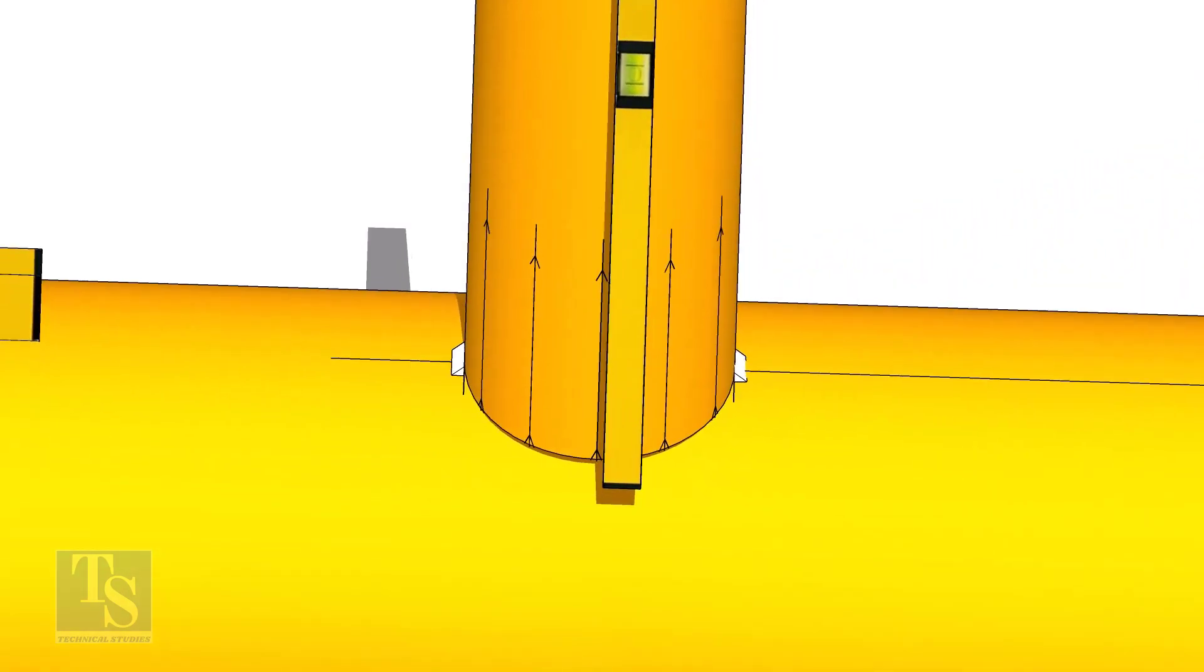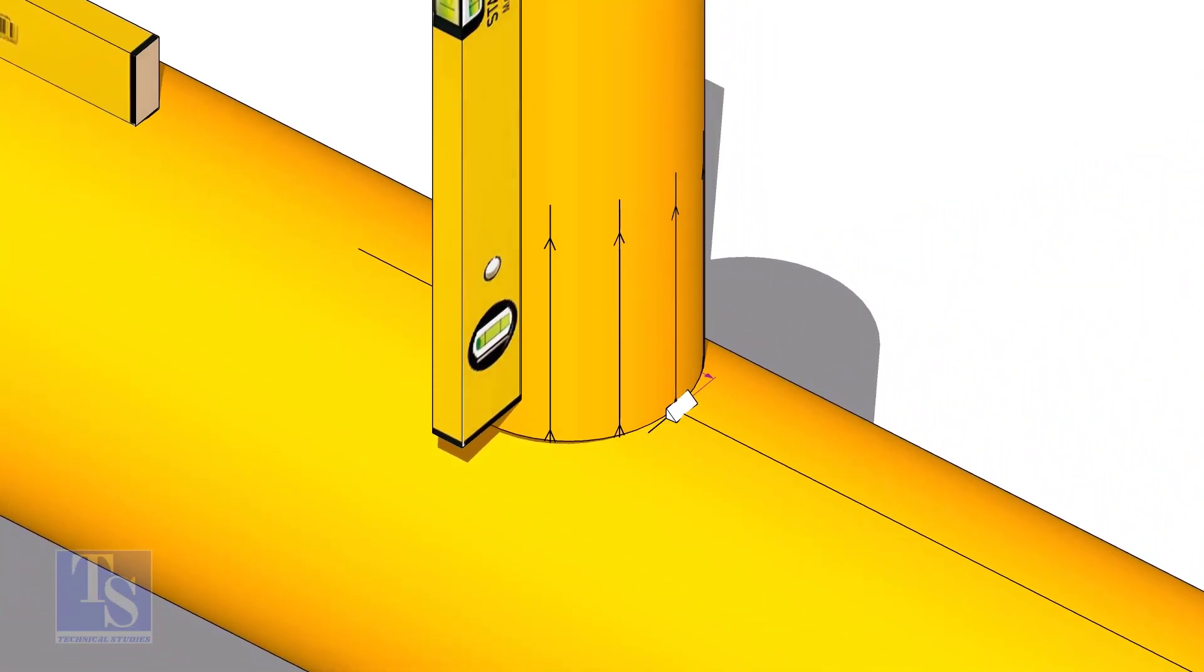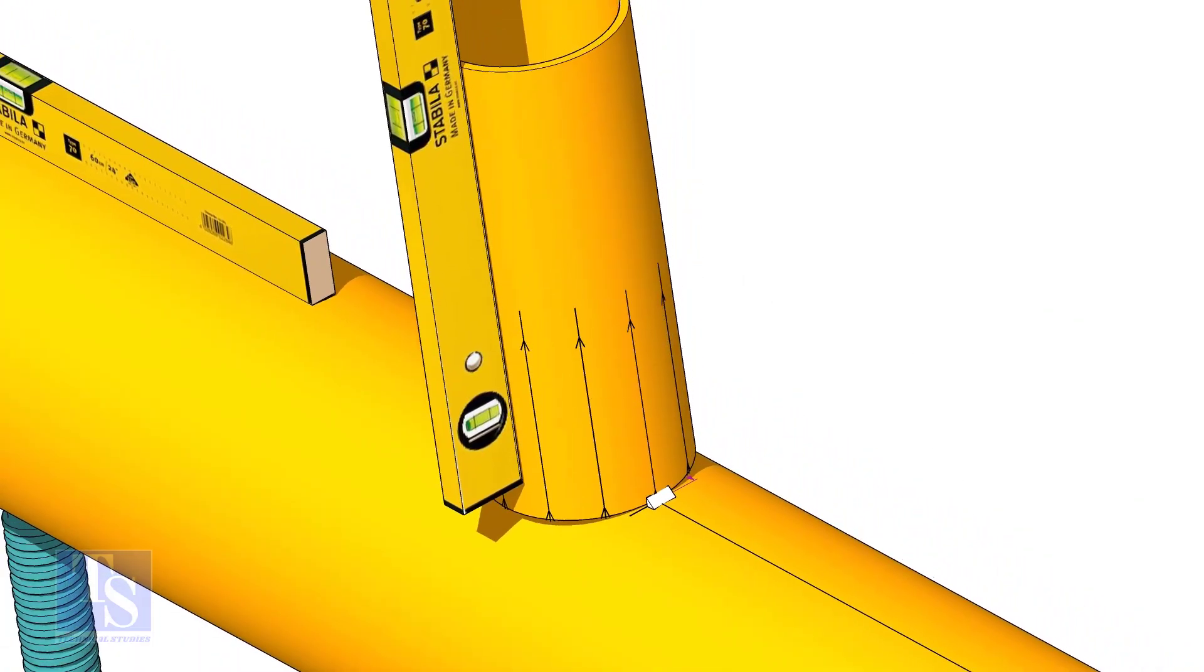Now, make sure the pipe header and the branch are horizontally and vertically level. If required, strengthen the tack weld.